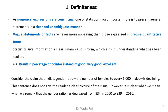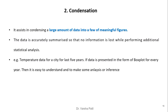Consider the claim that India's gender ratio (females per thousand males) is declining — this sentence does not give a clear picture. However, it becomes clear when we say the gender ratio decreased from 934 in 2000 to 929 in 2010. The second function is condensation: statistics assists in condensing large amounts of data into a few meaningful figures. For example, temperature data for a city over five years presented as a box plot per year is easy to understand and analyze.